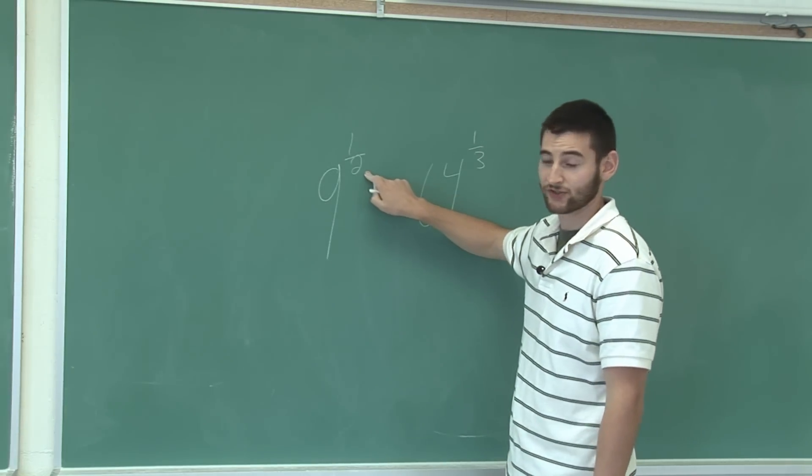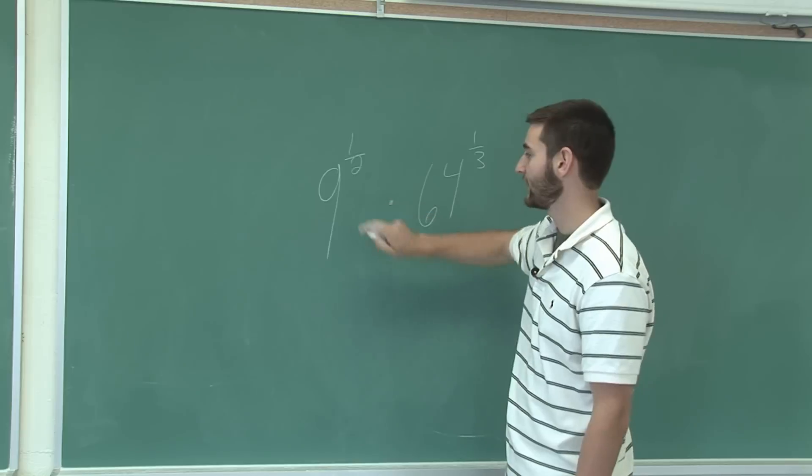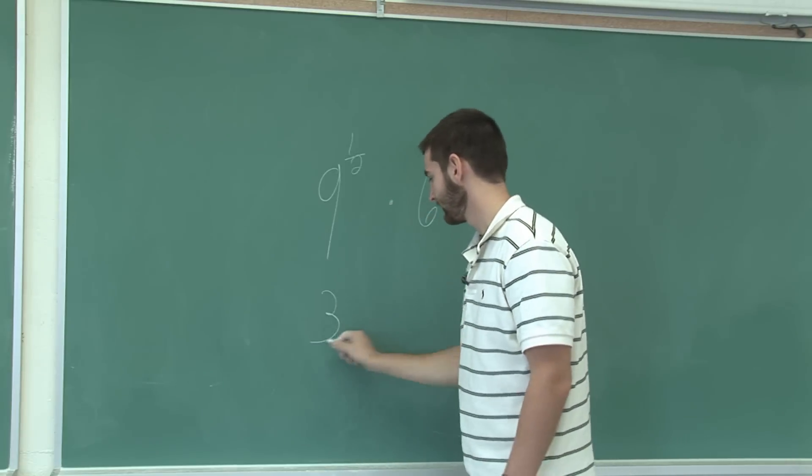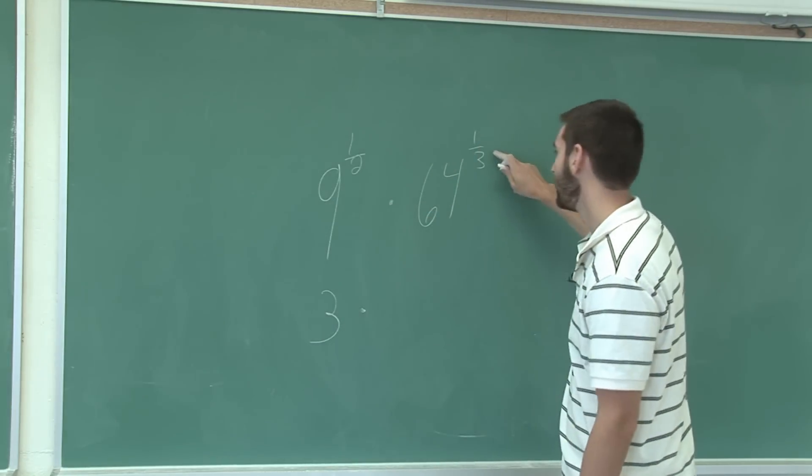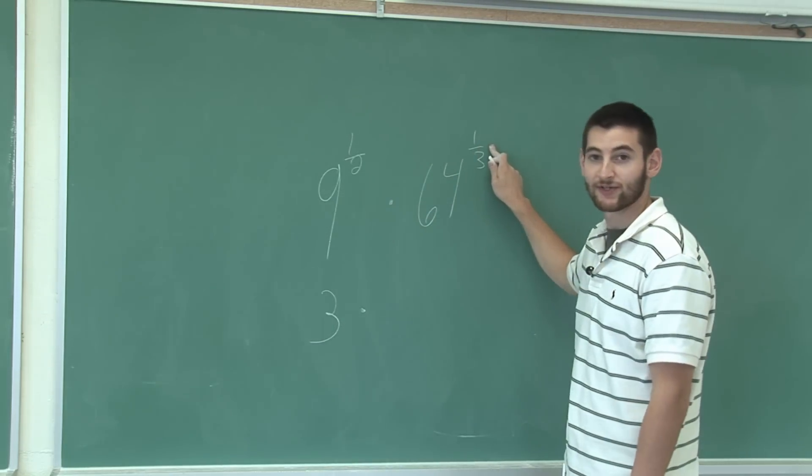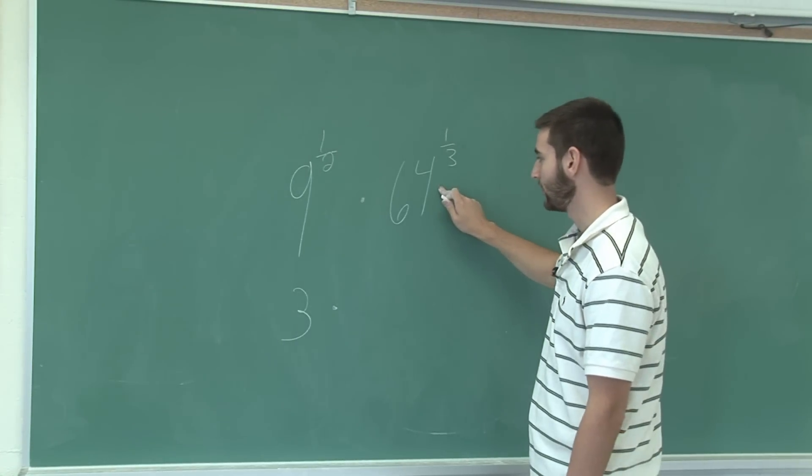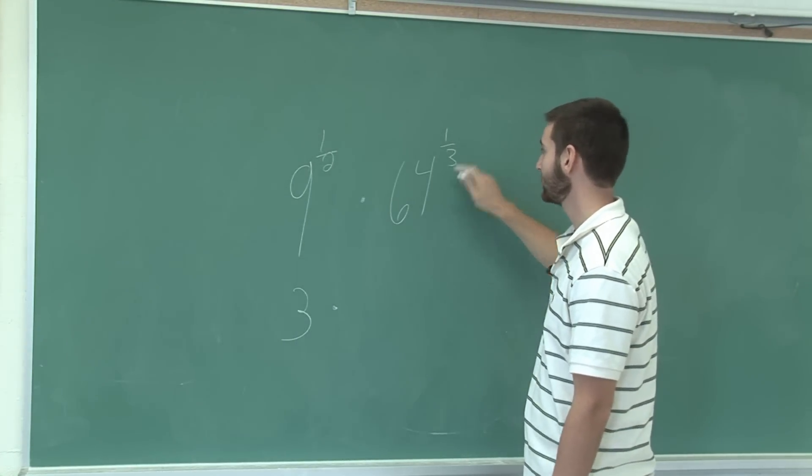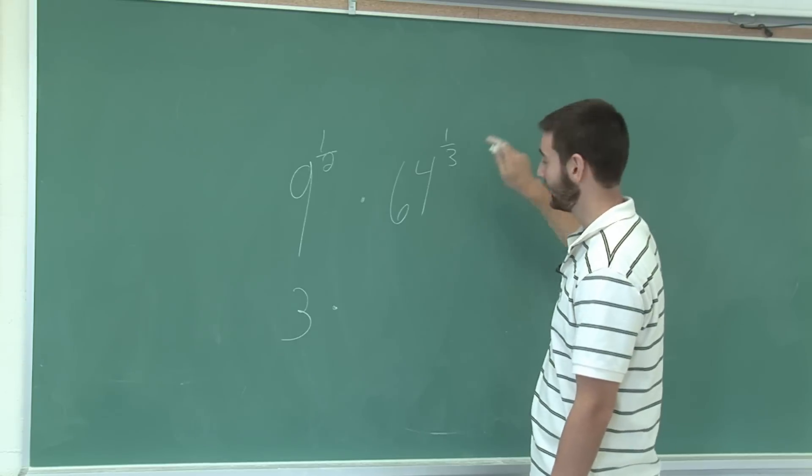The exponent of 1 half represents square root and the square root of 9 is 3. The exponent of 1 third represents the cube root and the cube root of 64 is 4 because 4 times 4 times 4 is 64.